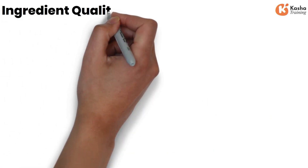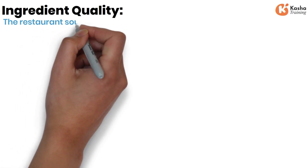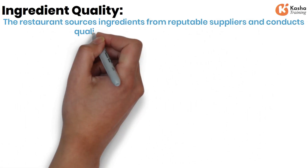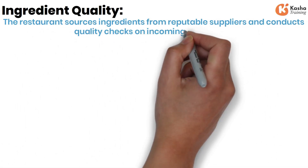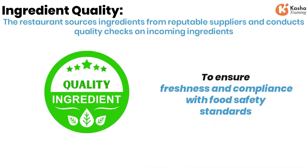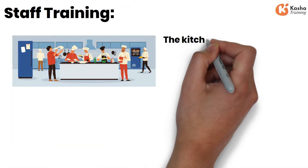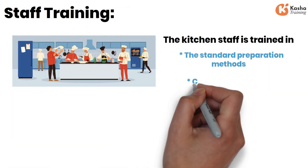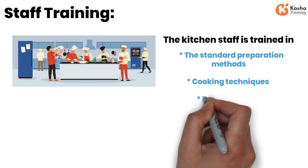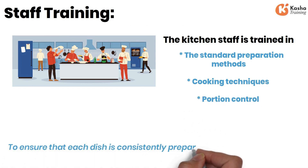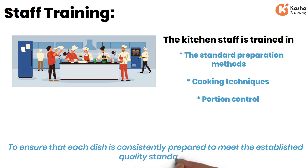Ingredient Quality: the restaurant sources ingredients from reputable suppliers and conducts quality checks on incoming ingredients to ensure freshness and compliance with food safety standards. Staff Training: the kitchen staff is trained in the standard preparation methods, cooking techniques, and portion control to ensure that each dish is consistently prepared to meet the established quality standards.